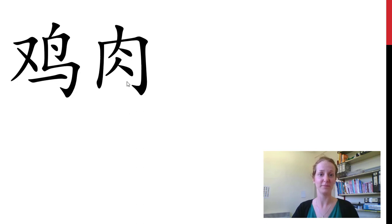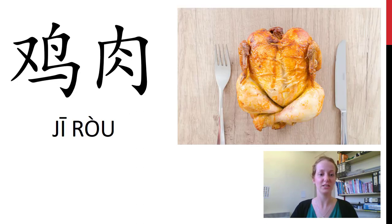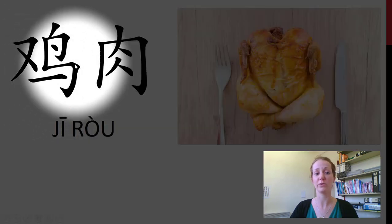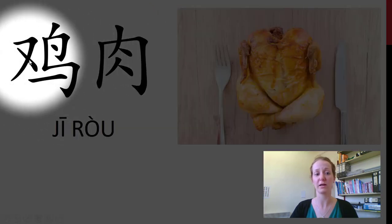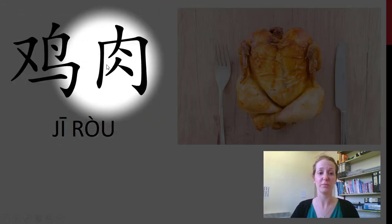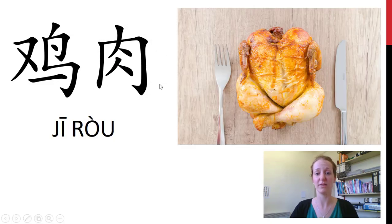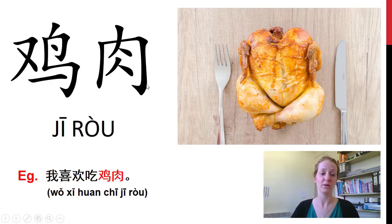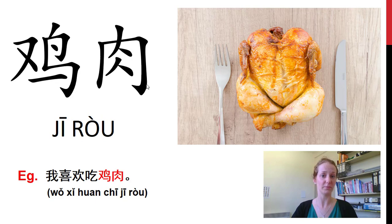这是鸡肉. Remember from our animals we've got the bird radical over here — this is our chicken. Combine it with the meat and we have chicken meat. 我喜欢吃鸡肉.